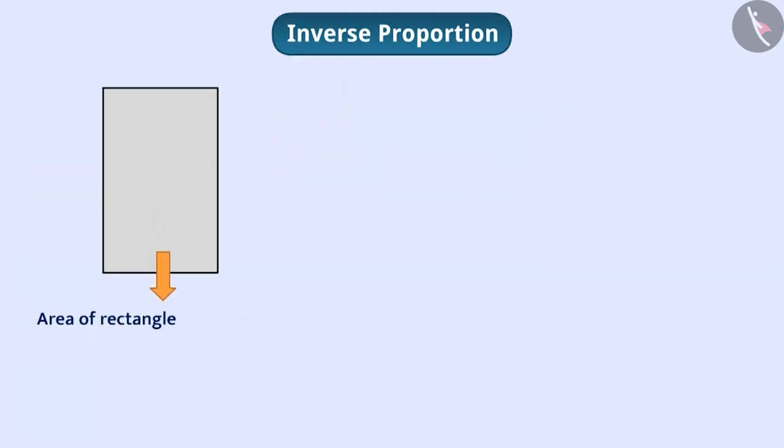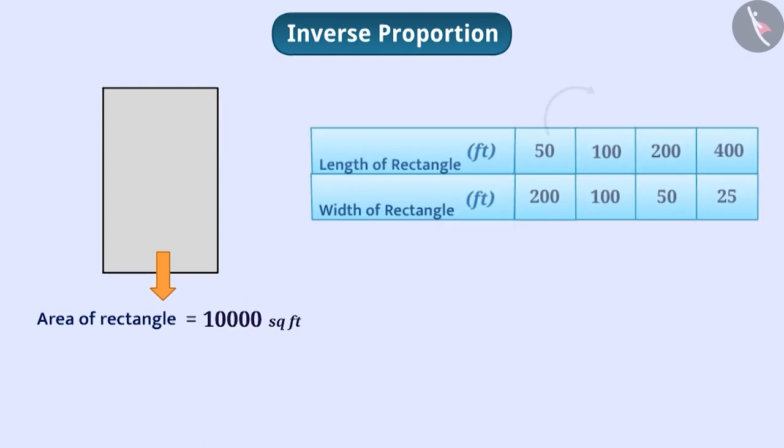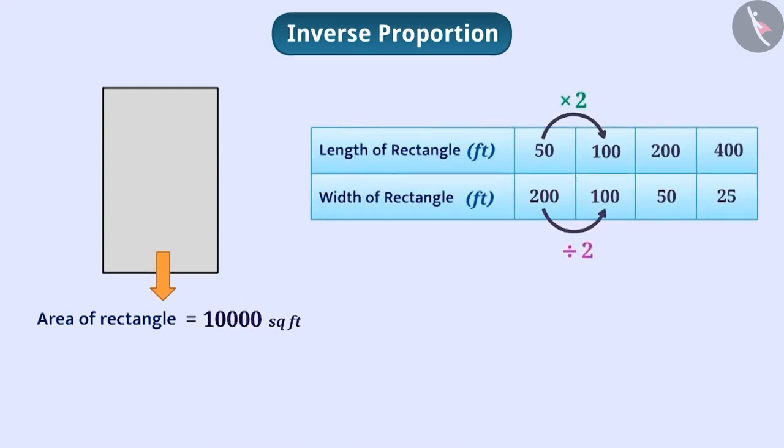When the area of the rectangle is kept constant, there will be a decrease in the proportion of width as the length increases. Therefore, the length and the width of a rectangle with a fixed area are inversely proportional to each other.